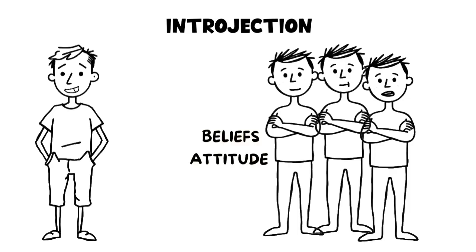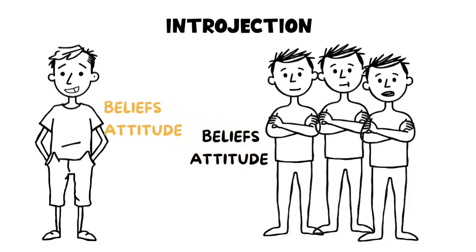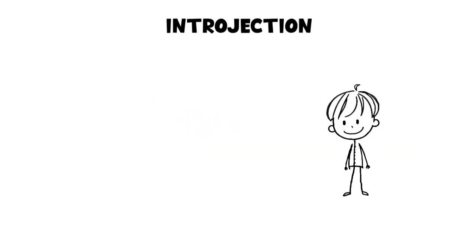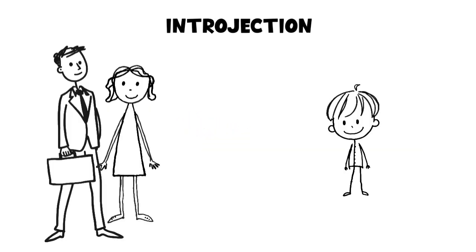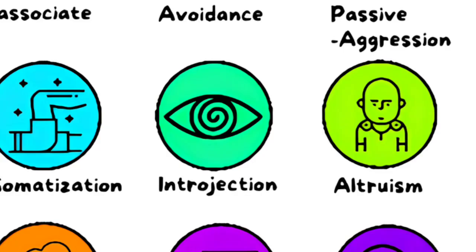Introjection. Introjection happens when someone unconsciously absorbs the beliefs or attitudes of others as their own. A child might adopt a parent's prejudices without realizing it.